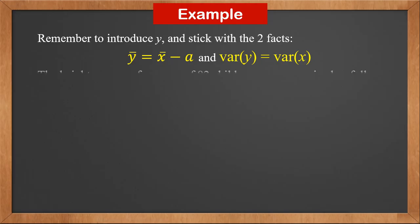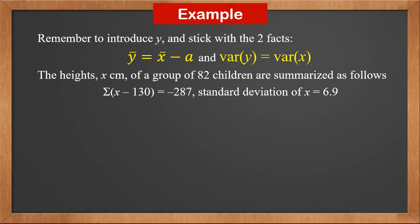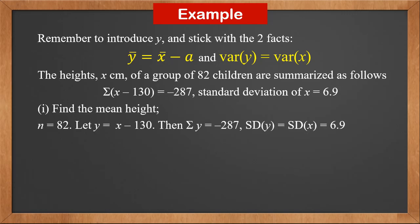Now let's look at an example. The heights, x centimeter, of a group of 82 children are summarized as follows. Sigma x minus 130 is minus 287. Standard deviation of x is 6.9. First, find the mean height. We know n is 82.